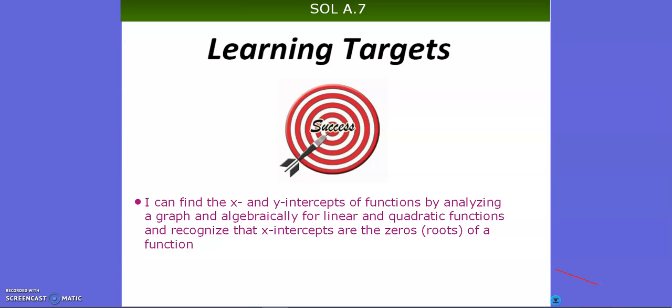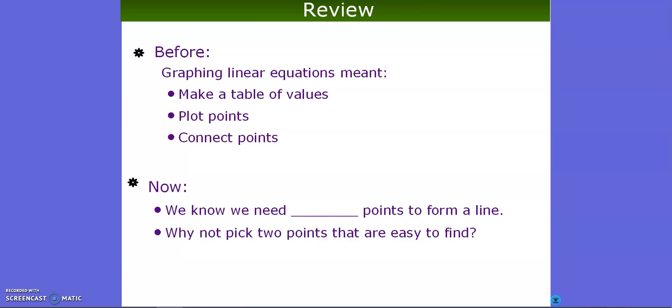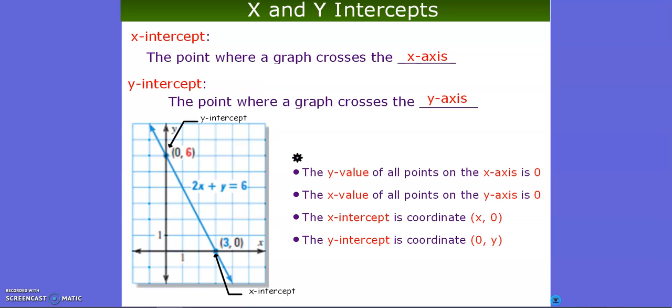Today we're going to take a look at graphing linear functions with the table of values, but we're going to be specific with our table of values, and we're going to choose numbers that are going to cross the x and the y axis. These are going to be your x and y intercepts, and these will be two points, and then all we have to do is go ahead and graph.